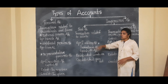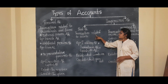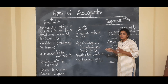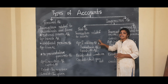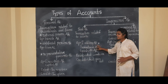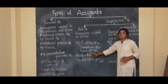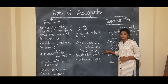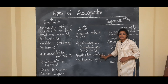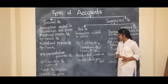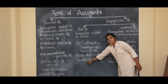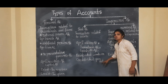Real account covers transactions related to assets. Transactions related to assets are recorded in the real account. Examples include building account, furniture account, and goodwill account. The debit and credit rules for real account are: debit what comes in, credit what goes out.